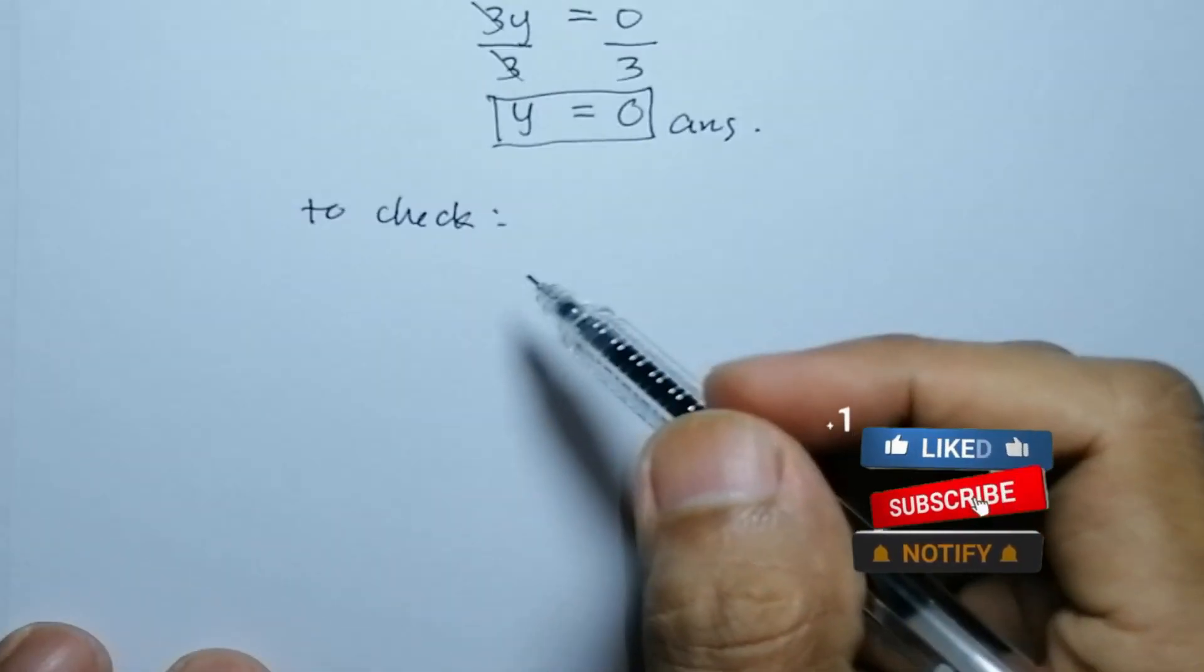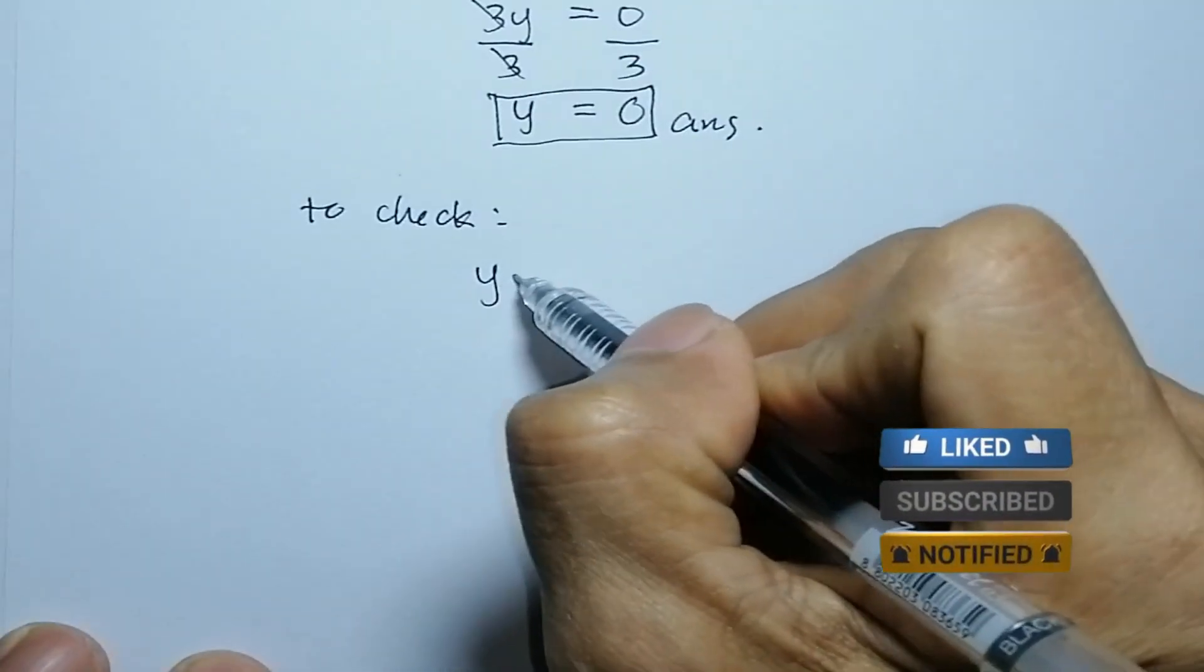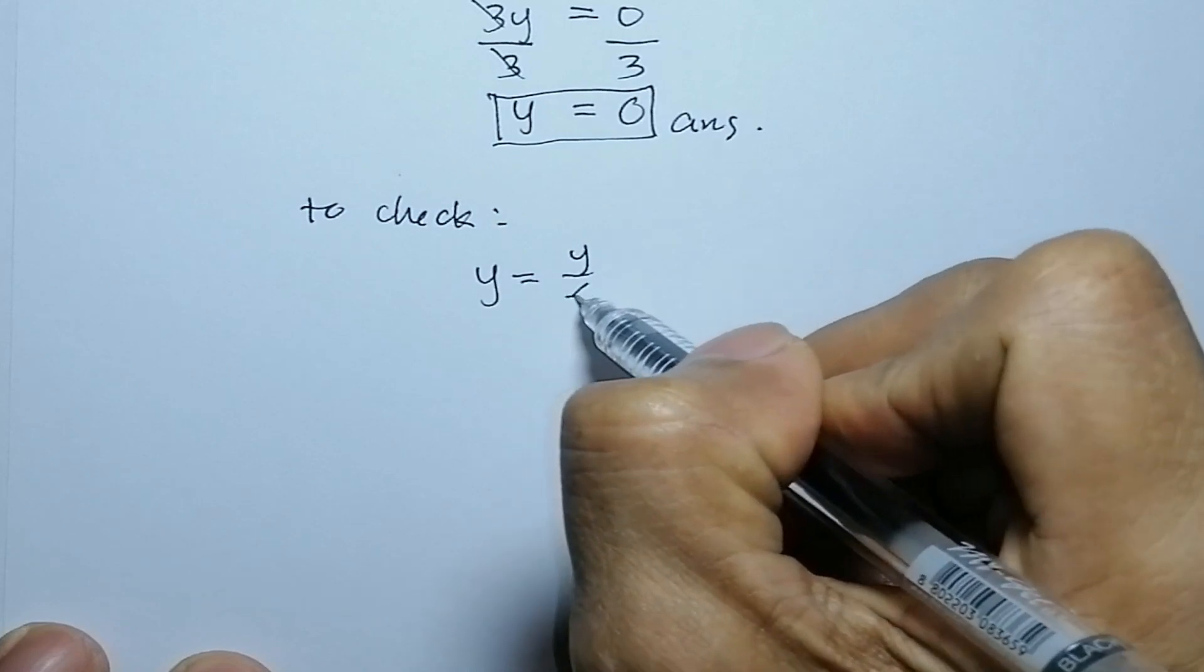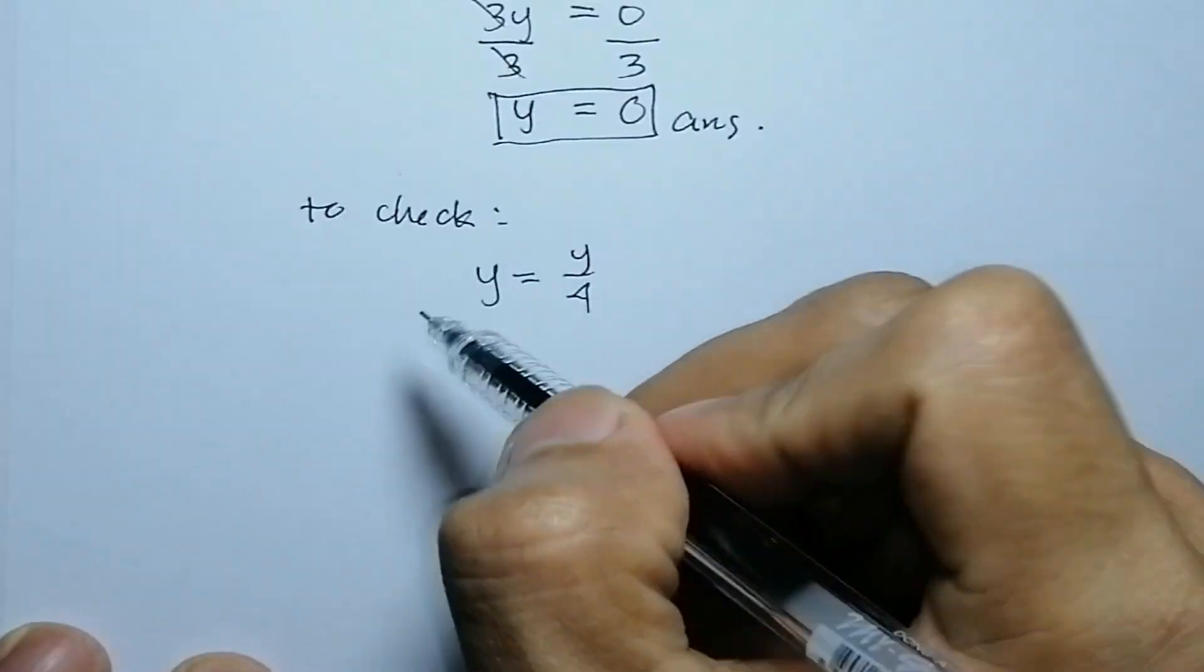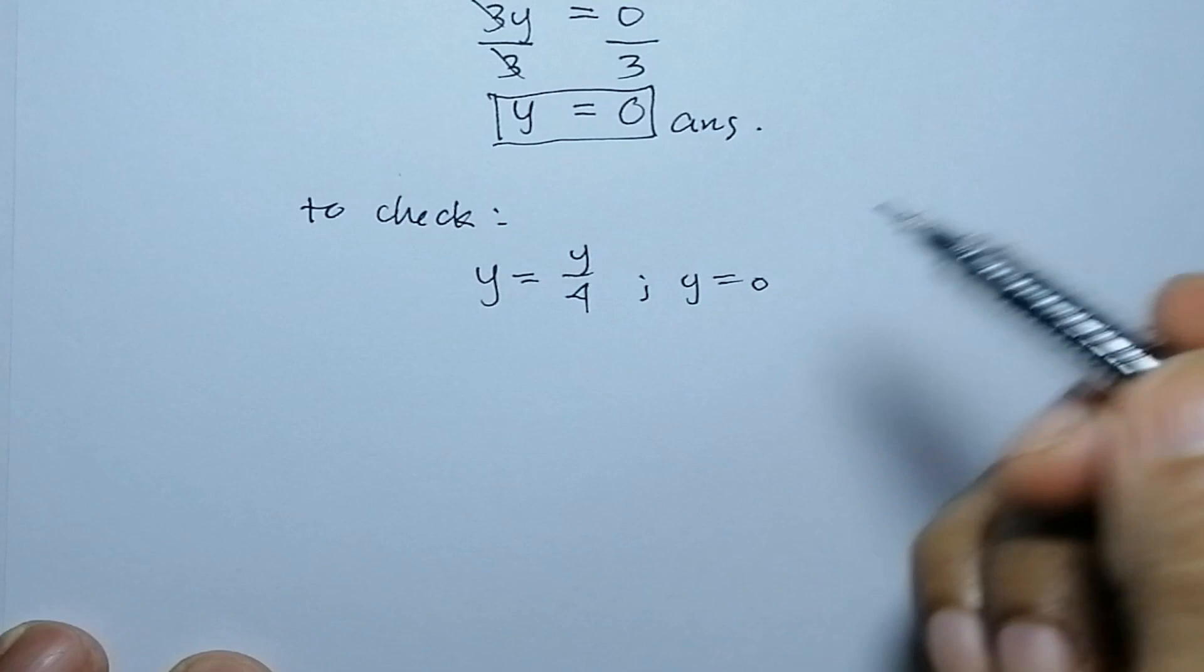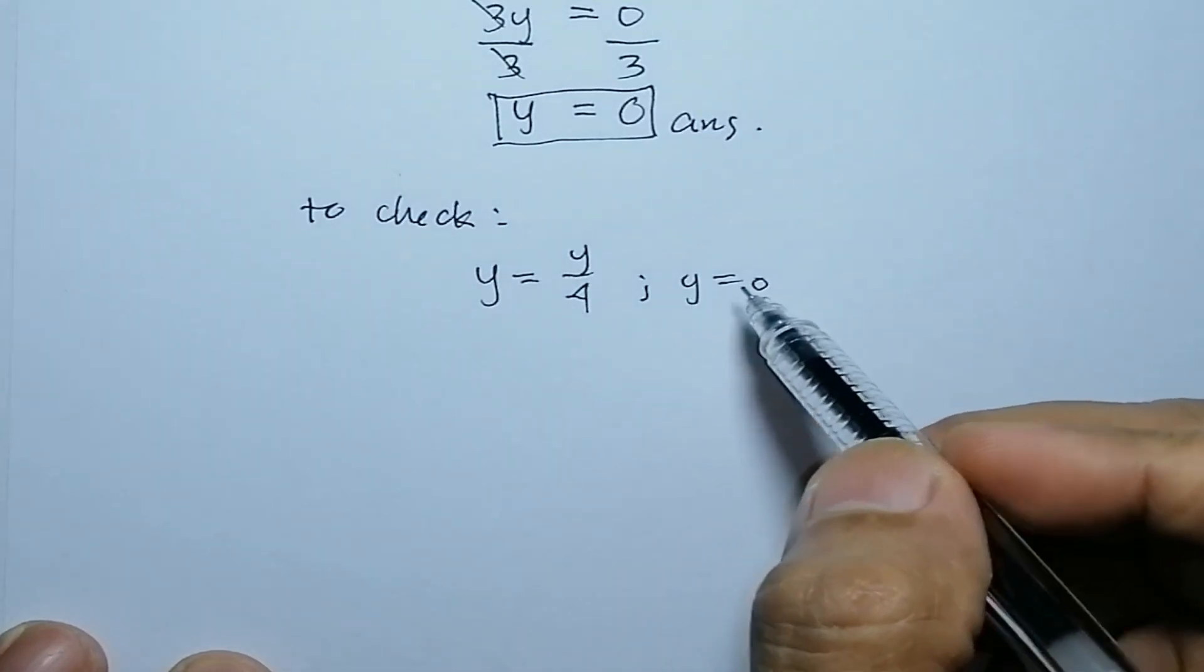To check, since our original equation is y equals y over 4, we substitute our answer y equals 0.